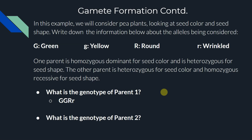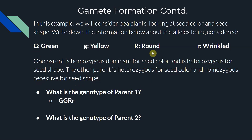Now let's figure out parent two's genotype. Parent two is heterozygous for seed color, so using our G's — heterozygous means one dominant and one recessive allele: big G, little g. They are homozygous recessive for seed shape, using our R's — homozygous recessive means two copies of the recessive allele: little r, little r. Combined, parent two's genotype should be big G, little g, little r, little r.